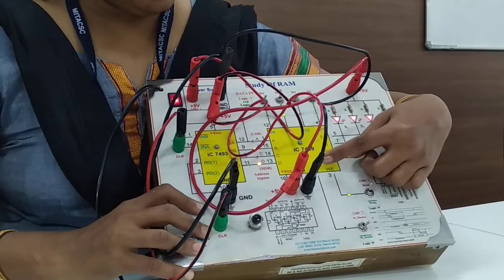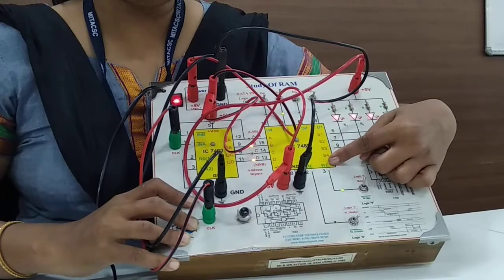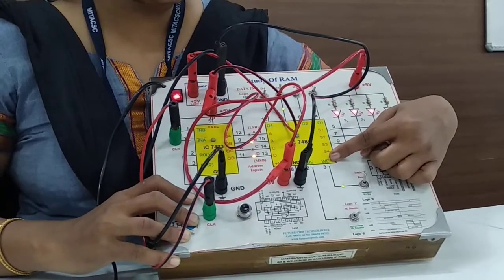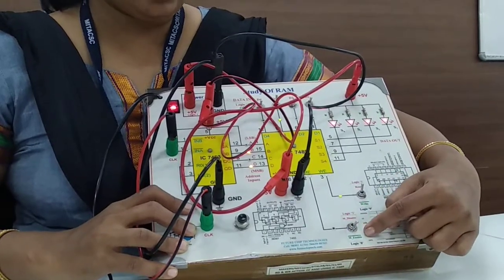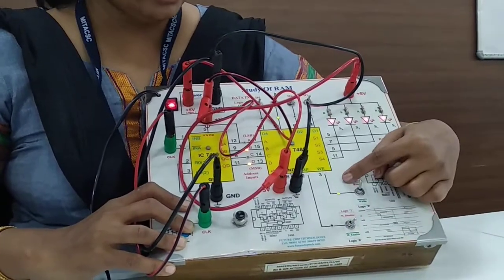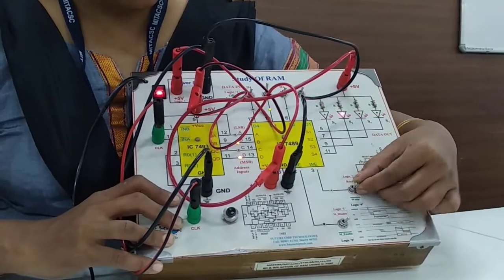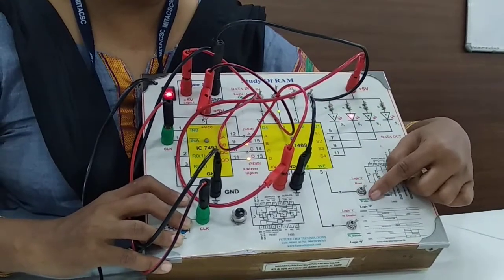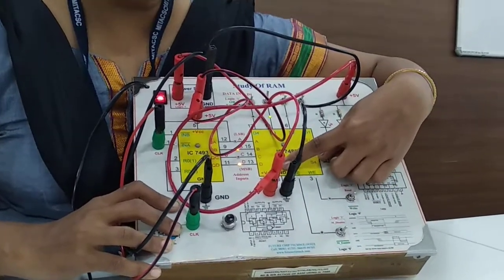Memory enable and read-write enable are the two control pins. For the action of memory, this memory enable pin should be at low logic. And for the write operation mode, this read-write signal should be at low logic. Then VCC and ground connection.